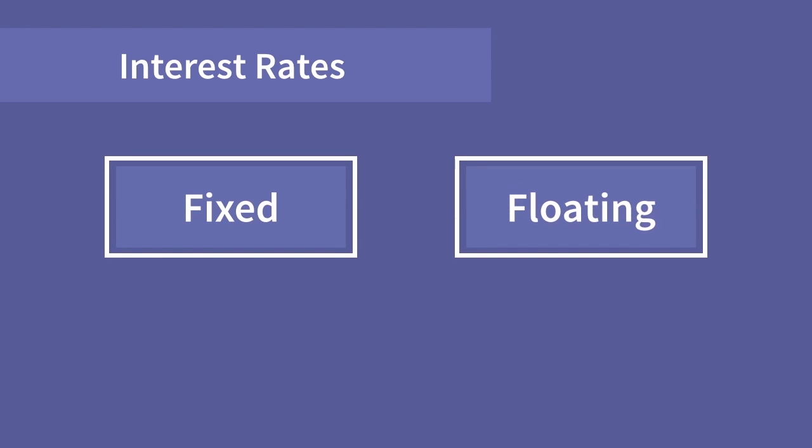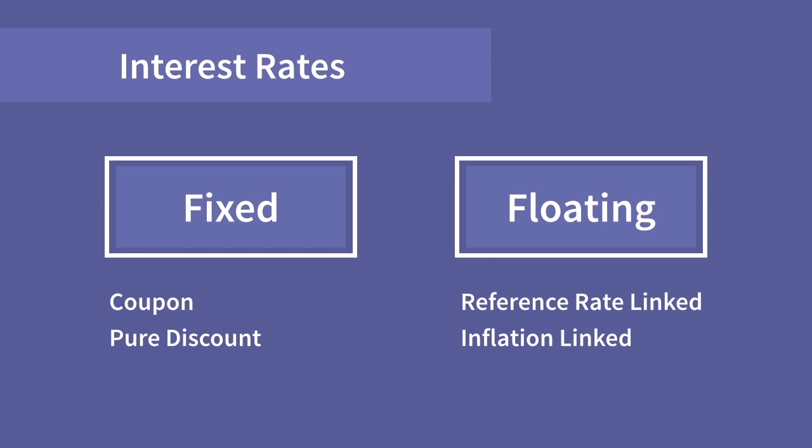We need to consider the interest rate of a sovereign bond. There are two major types here: fixed and floating. Under fixed rate, we can have a coupon bond or a pure discount bond, otherwise known as a zero coupon bond. Coupon bonds pay some fixed payment each period and pay the principal at maturity. Zero coupon or pure discount bonds pay no periodic interest amount — they are bought at a discount from face value and at maturity, the full face value is paid to the investor. Under floating rate, bonds are issued with rates that are linked either to a reference rate or to inflation, although it was more common that a bond would be linked to inflation than a reference rate for governments.